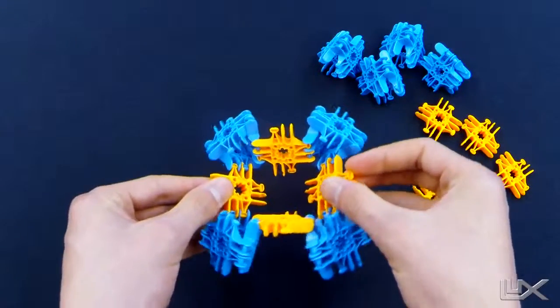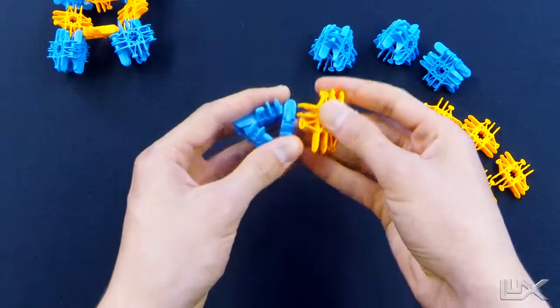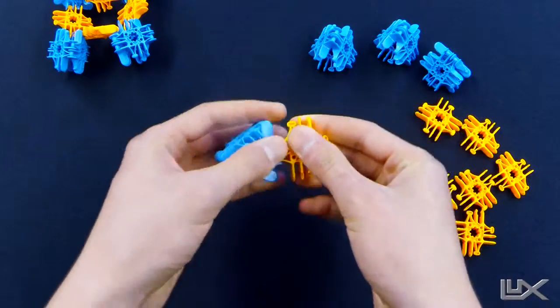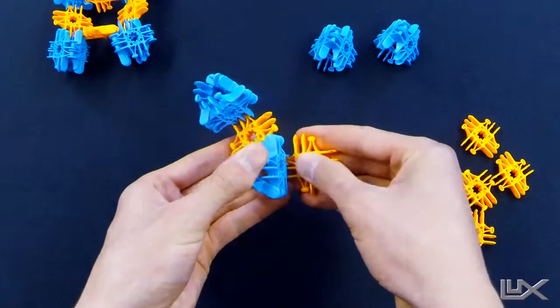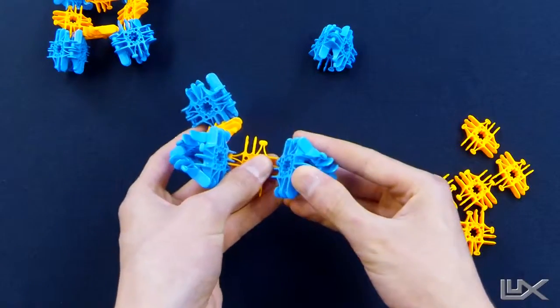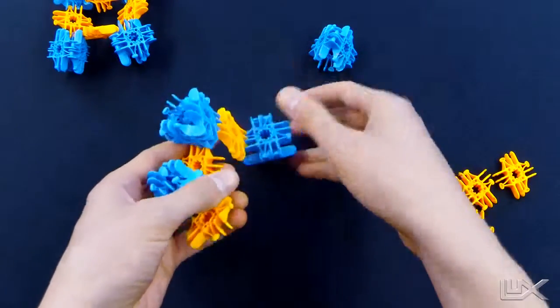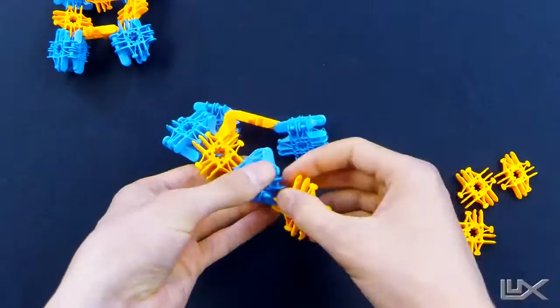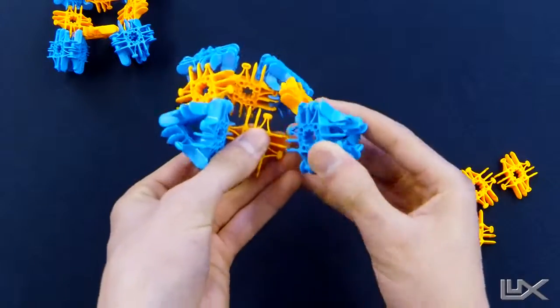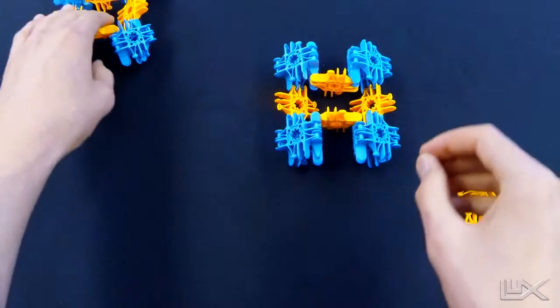Once you've completed your first one, set it to the side. We're going to make our next one the same way. Connect four prisms together, add one more orange piece, and that's our top half.